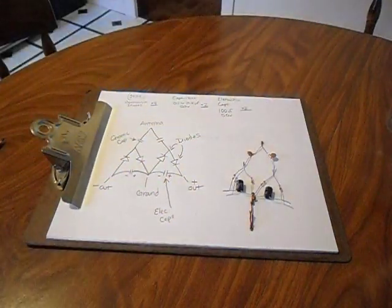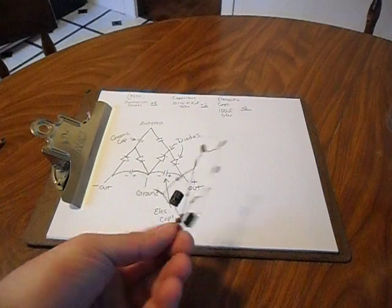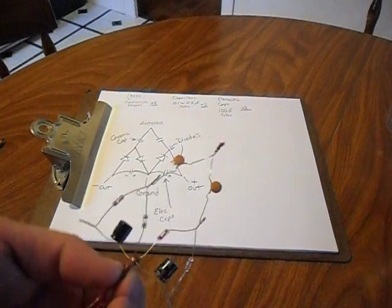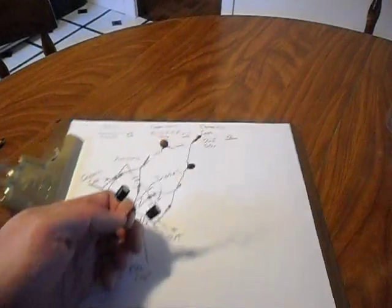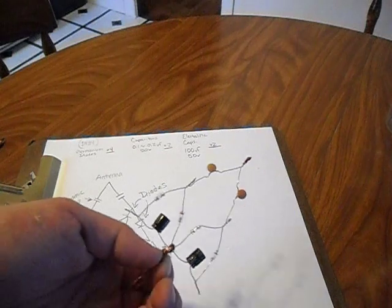This is the Tesla air circuit in the most primitive form. Anybody who builds one of these should maybe think about trying to find a way to improve on this.